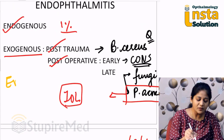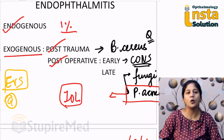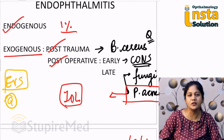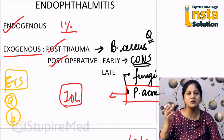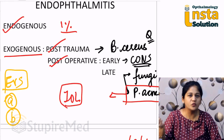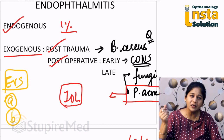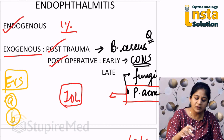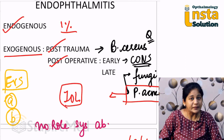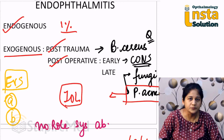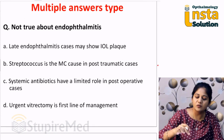Treatment follows the Endophthalmitis Vitrectomy Study (EVS). The EVS says if vision is poor — less than perception of light or less than finger counting close to face — you may need to do an urgent vitrectomy. If vision is slightly better, such as finger counting close to face or PR accurate, you may not need vitrectomy; instead, do a tap of the vitreous and give intravitreal antibiotics. The EVS also states there is no role or hardly any role for systemic antibiotics — only intravitreal antibiotics are warranted.